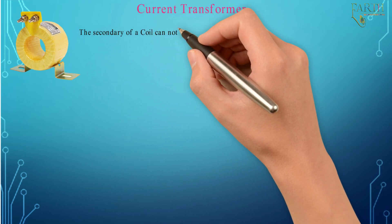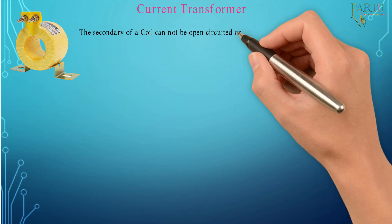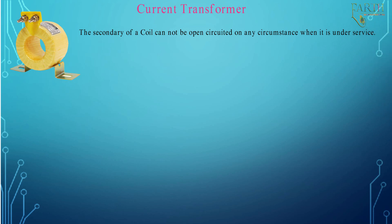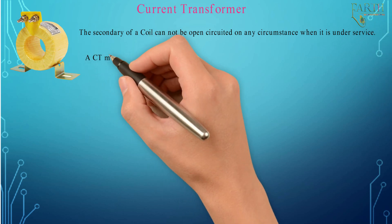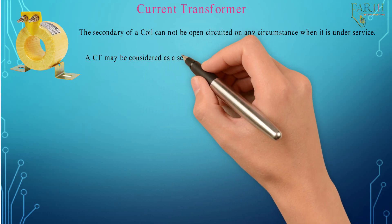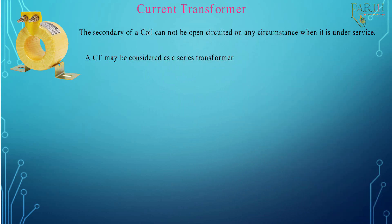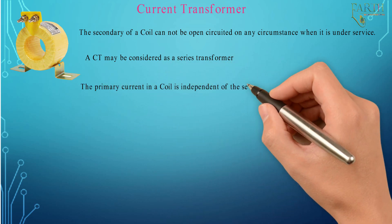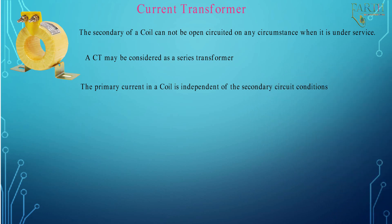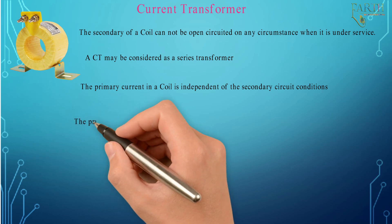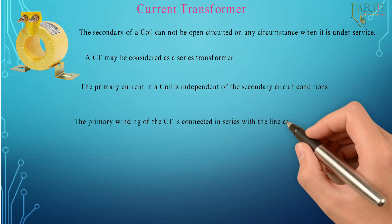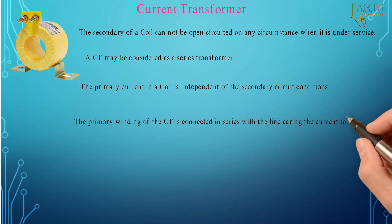The secondary of a CT coil cannot be open-circuited under any circumstance when it is in service. A CT may be considered as a series transformer. The primary current in a CT is independent of the secondary circuit conditions. The primary winding of the CT is connected in series with the line carrying the current to be measured.